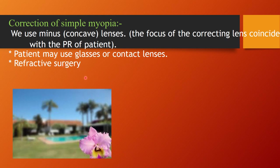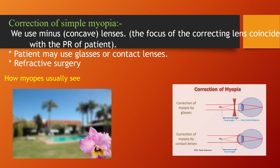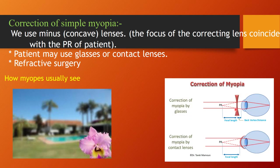This is how myopes typically see — near objects like a flower are sharp and clear, while distant objects are blurred. Correction with a minus or concave lens refocuses the image onto the retina. Contact lenses can also correct myopia.